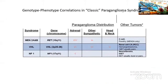We are very familiar with the genotype-phenotype correlations in classic paraganglioma syndromes. For example, with MEN2b and RET mutations, we have almost exclusively adrenal tumors, which may be associated with medullary thyroid carcinoma and parathyroid hyperplasia or neoplasia. Similarly, in NF1 we have neurofibromatosis type 1 with predominantly adrenal tumors, and the associated tumors there are GISTs. In VHL, the associated tumors include renal cell carcinoma.